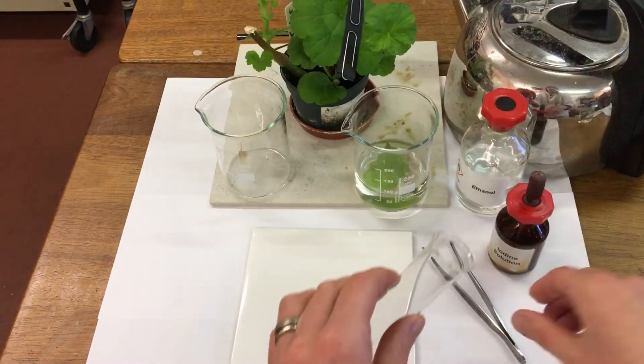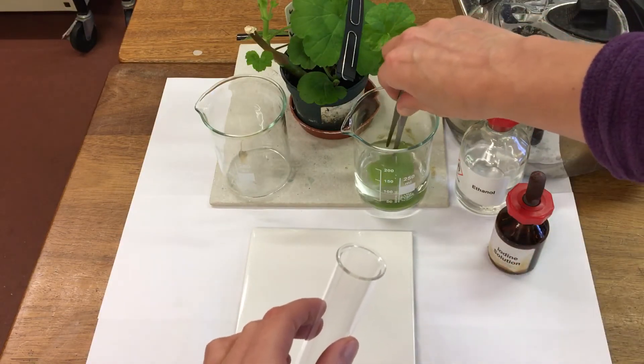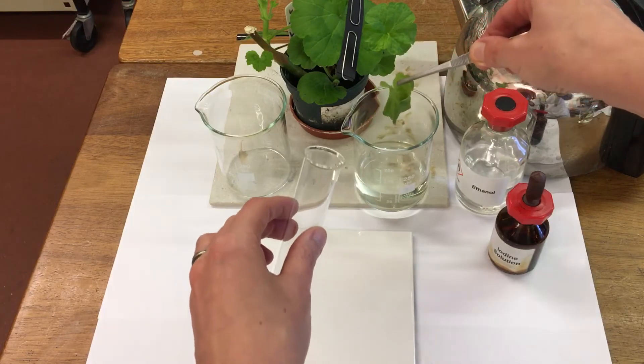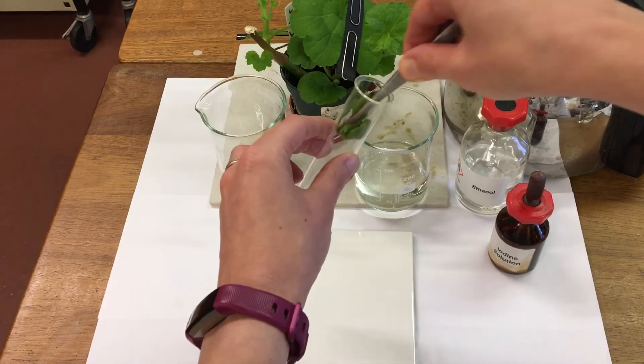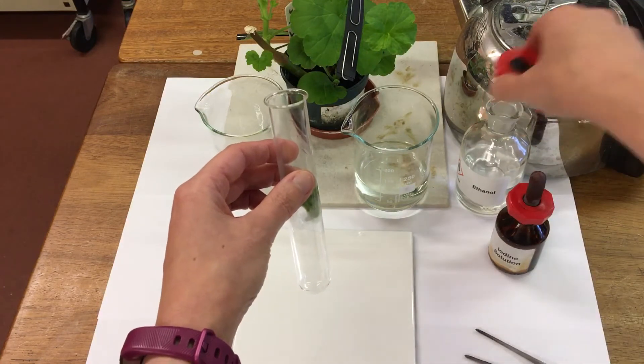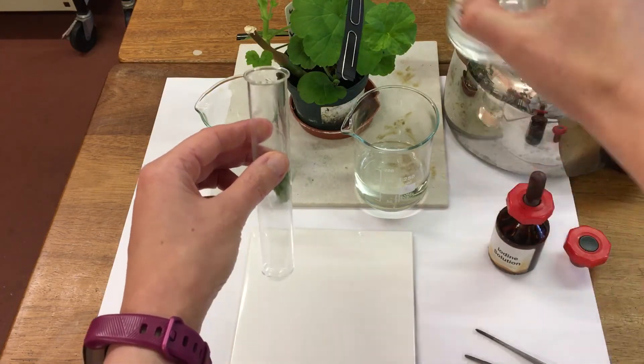The next part is to pop our leaf into some ethanol. So we're going to take the leaf, which you can see is much floppier, and we're going to add some ethanol.